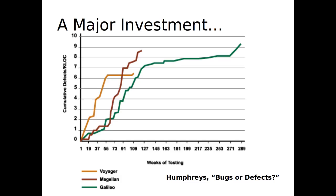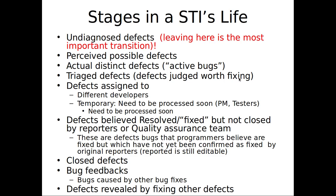Finding defects is hard. Finding defects is not a uniform process. Finding defects can go on even after years. Here we're out at week 289 — probably out there somewhere above five years — and we're still finding some defects.